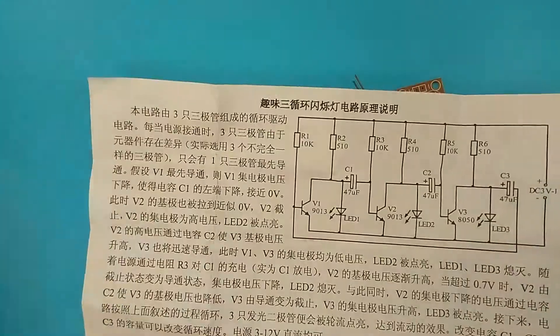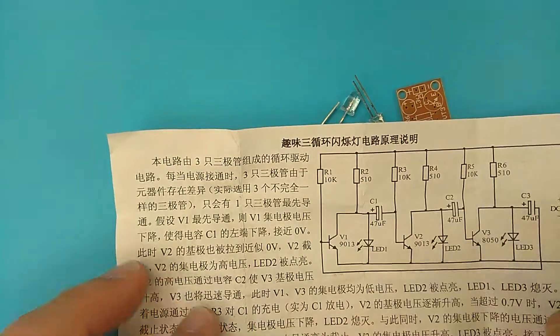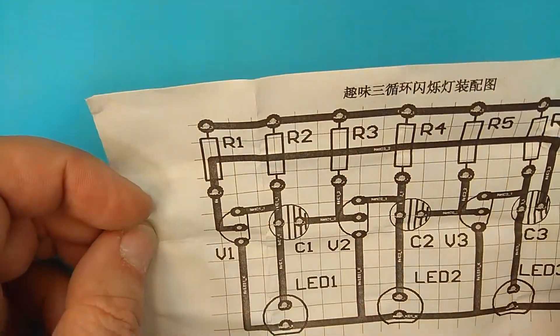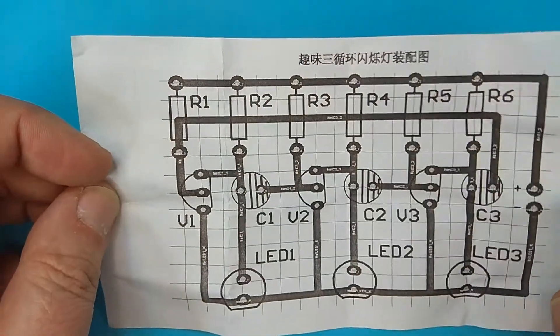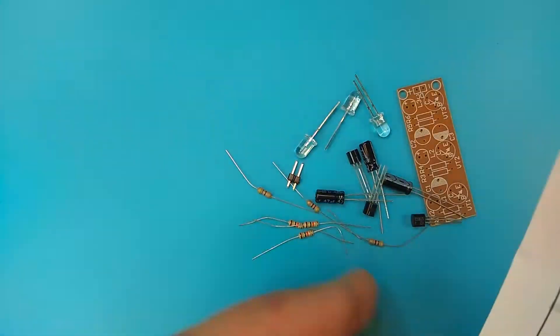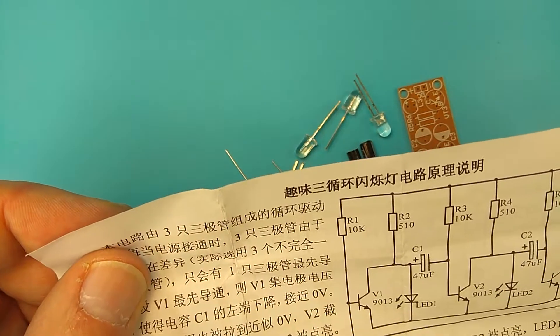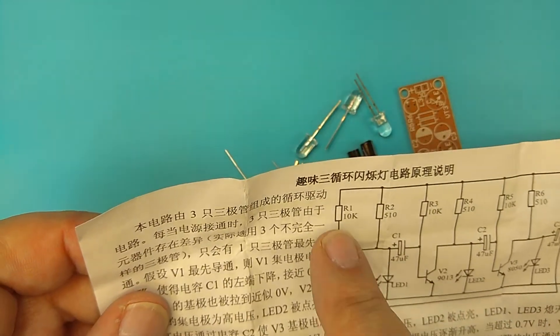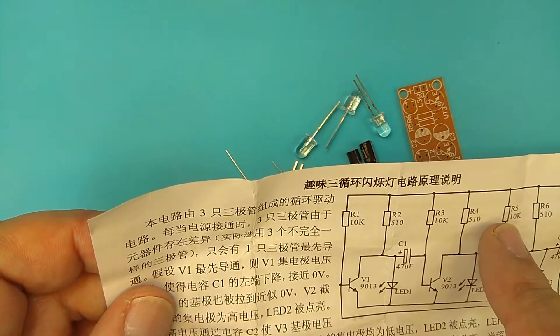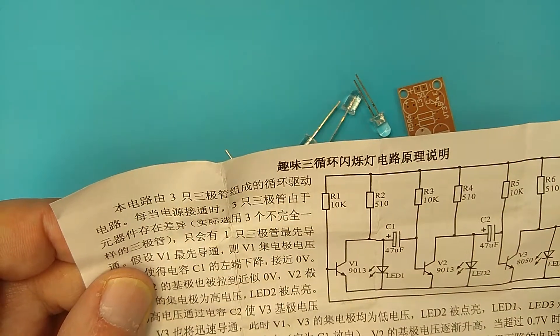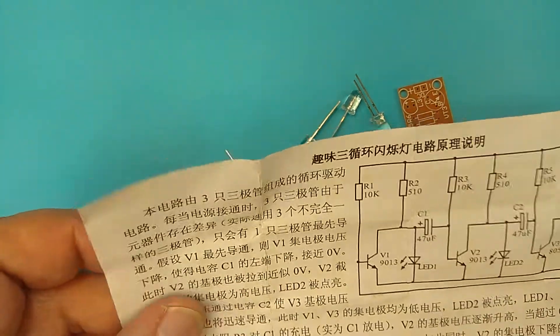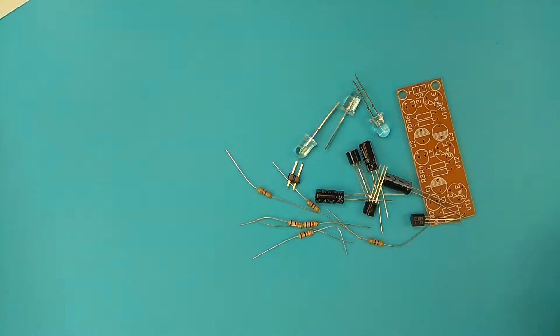There is a paper with the schematic so we don't need the webpage now and layout. And the odd resistors are 1K and the even number resistors 510 ohms. So it will be easy to assemble it. Let's do it!